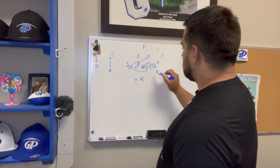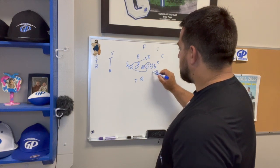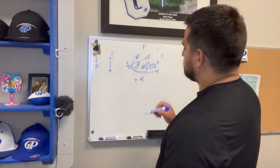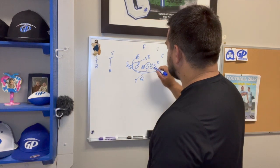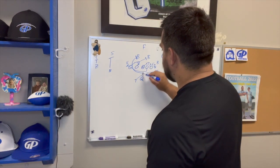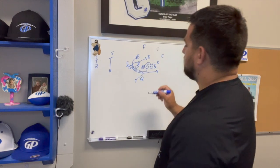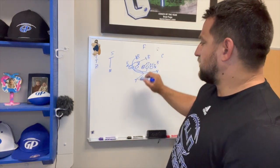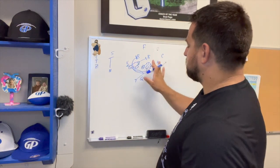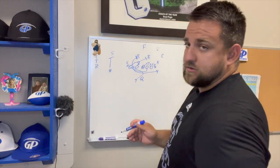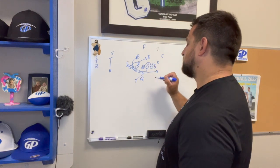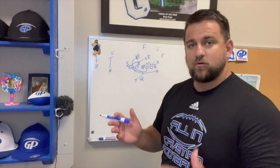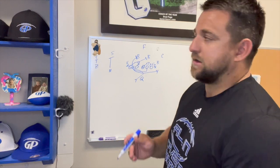Then we're going to bring our Y — he's going to pull and wrap, and ideally seal that backer. Our tailback takes two steps play side to look like he's going that way, then cuts back and follows the Y puller. He's got to find a seam — we say look somewhere between the B and C gap, because these gaps all change when we go gap down. You can't just say a set gap like a zone scheme. This tailback has to have really good vision and really good patience.